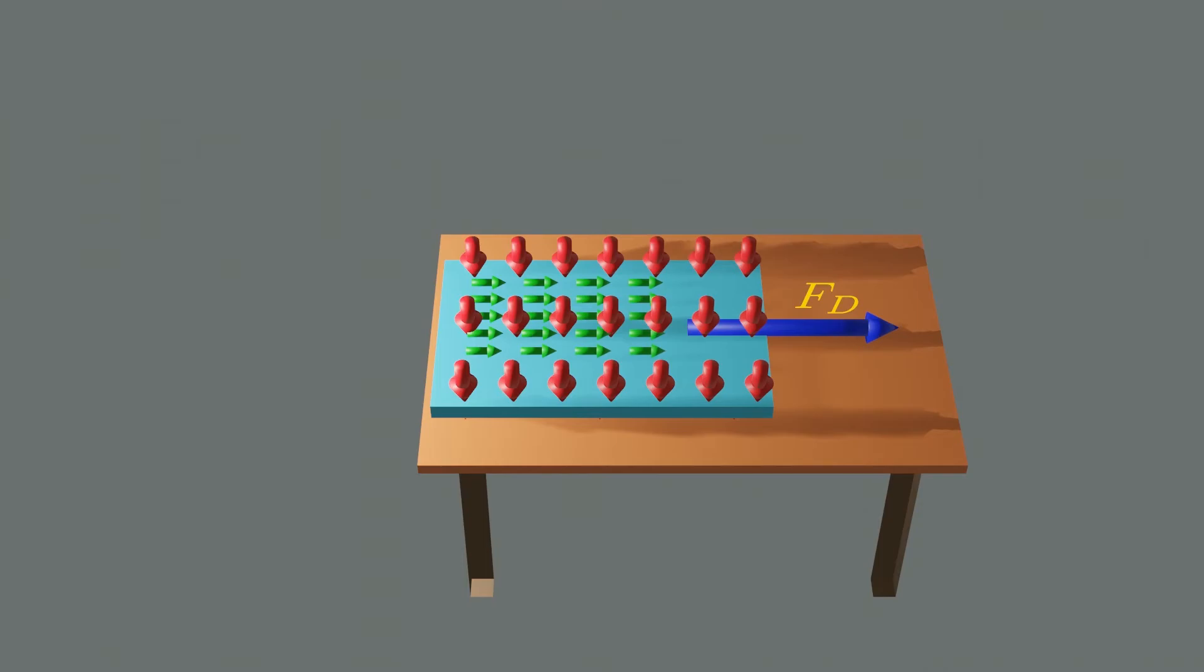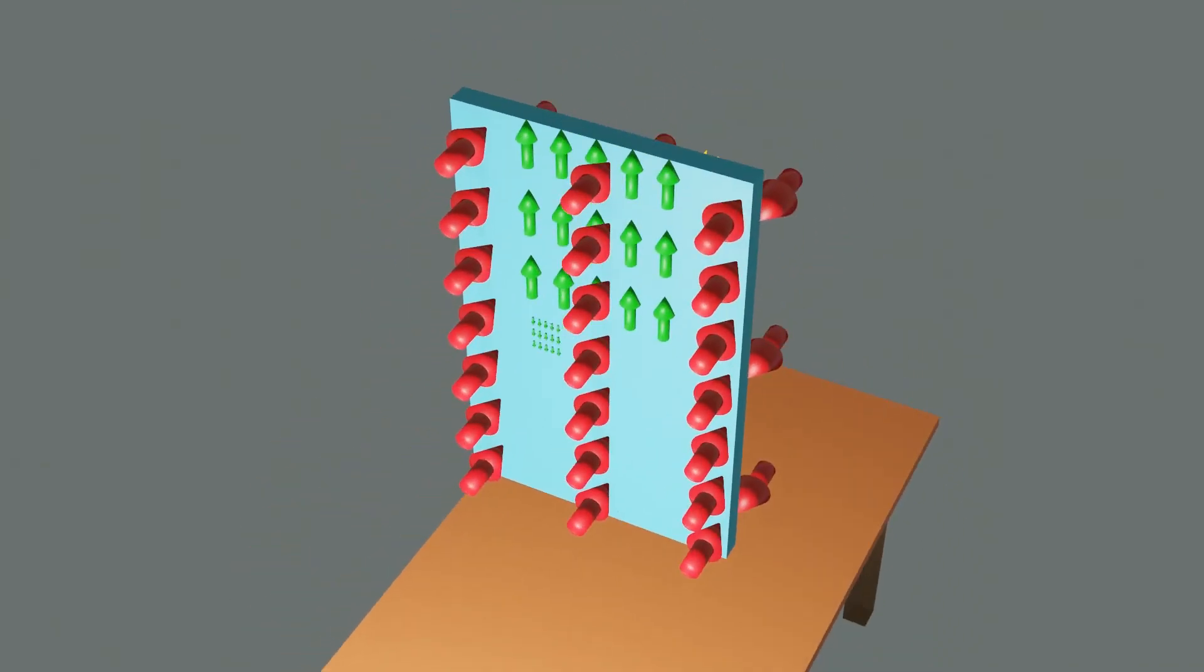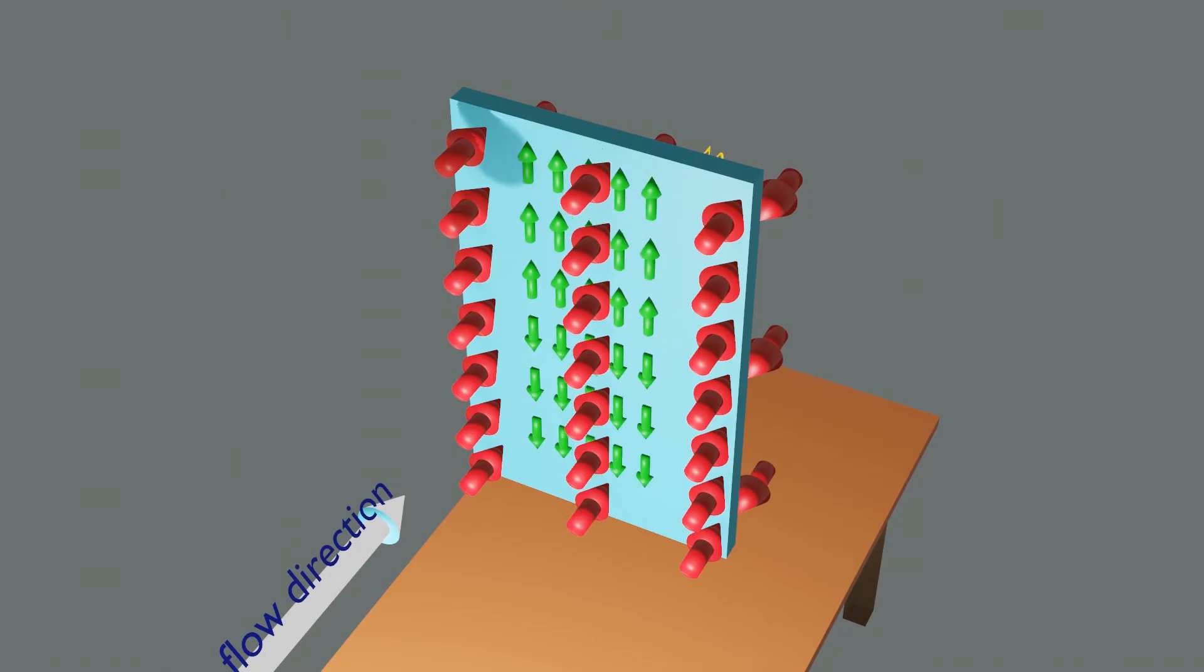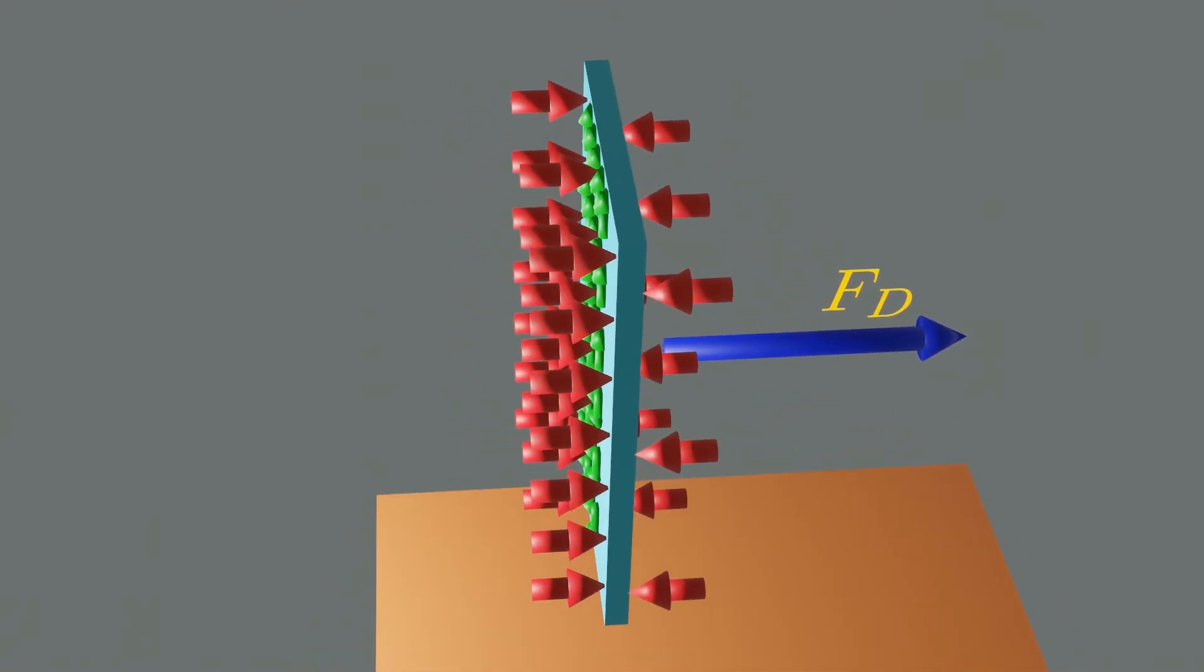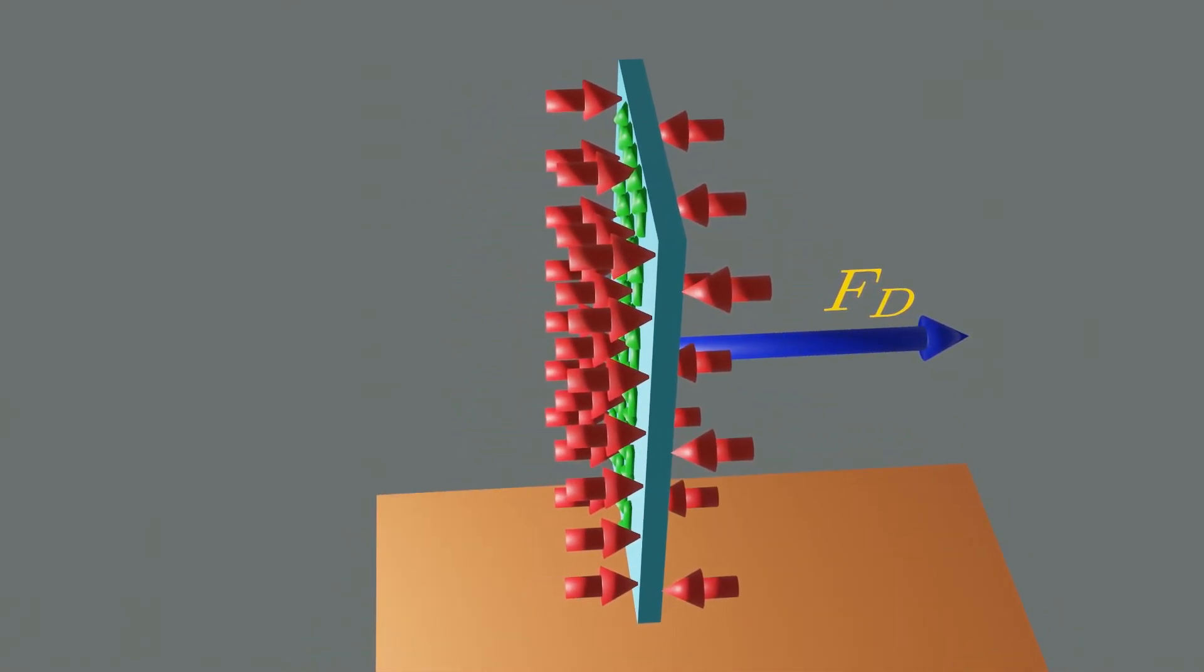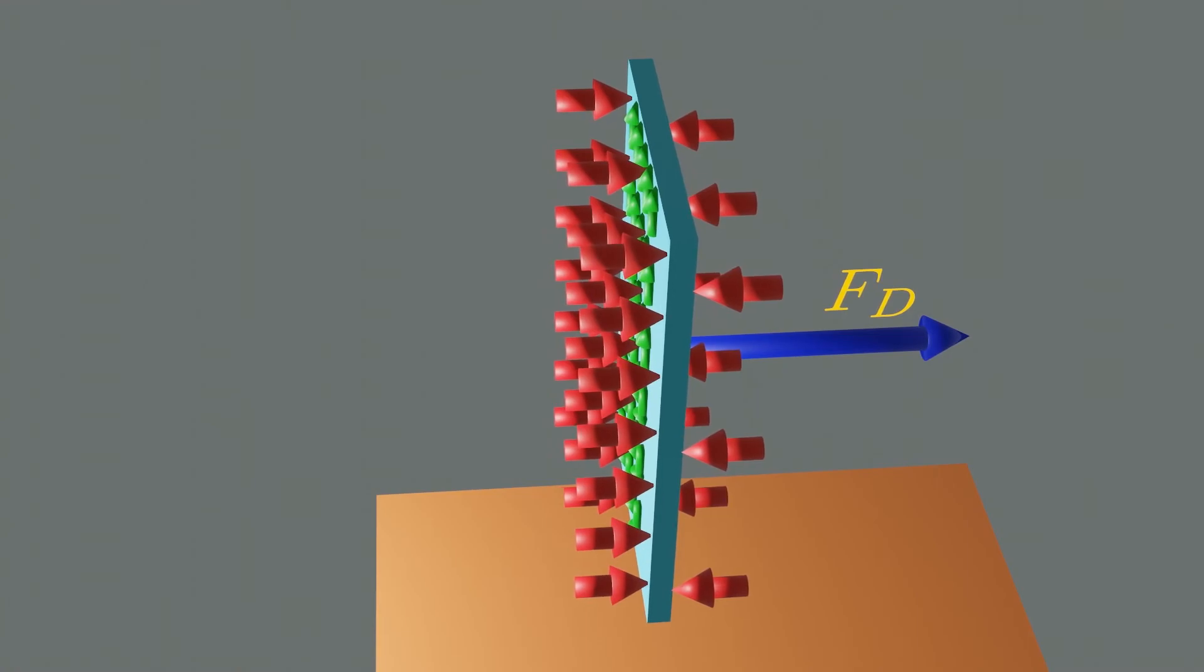Now, if you align this plate normal to the flow, then drag force depends on the pressure only and is independent of the wall shear. This time shear stress acts normal to the free stream flow, so its contribution is zero. There will be pressure difference between front and back surface, which might drag the plate. The low pressure at the back surface is due to fluid separation, which I will describe in more detail in the next video.